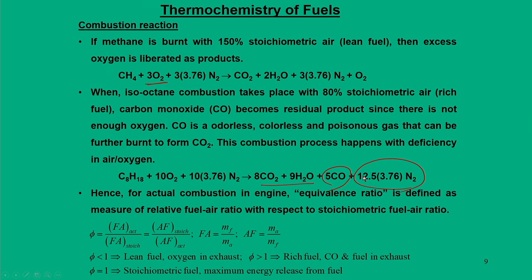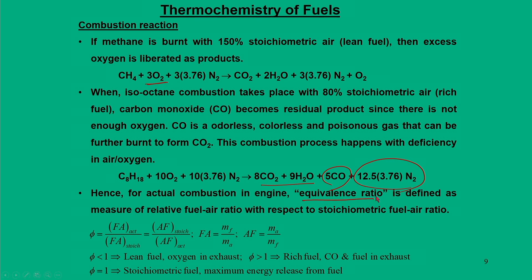To quantify the richness or leanness of a fuel mixture, we define a parameter called equivalence ratio. The equivalence ratio φ is defined as the measure of the relative air-fuel ratio with respect to the stoichiometric air-fuel ratio — specifically, the actual fuel-air ratio divided by the stoichiometric fuel-air ratio. When the mixture is lean, there is oxygen in the exhaust; when the mixture is rich, carbon monoxide is present. When φ equals 1, maximum energy is released from the fuel.